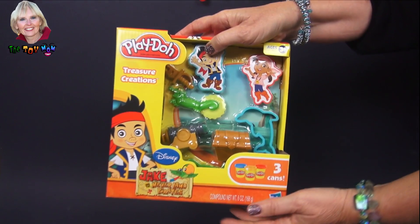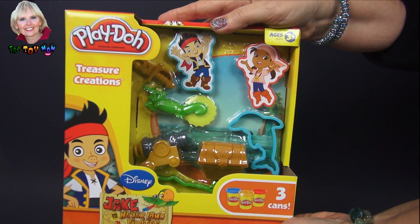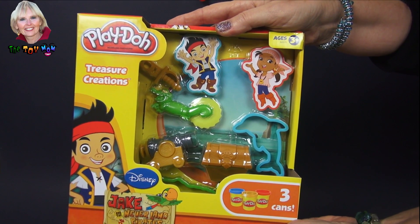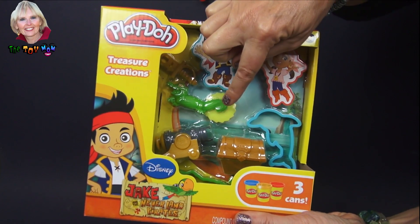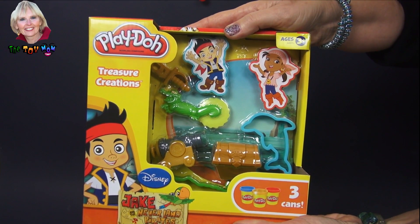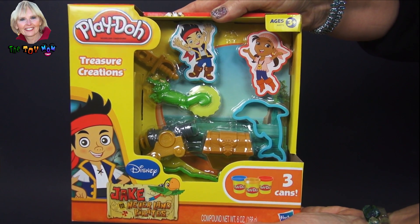This Play-Doh set is featuring Jake the Pirate, and what we're going to be able to do is make some molds. It looks like we have a cutter, a cannon, I can't wait to see what that does. And this is treasure creations. So let's make some treasure creations right now.